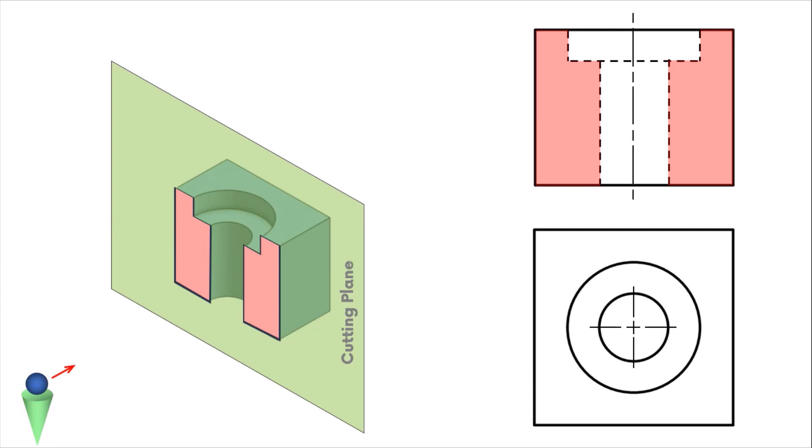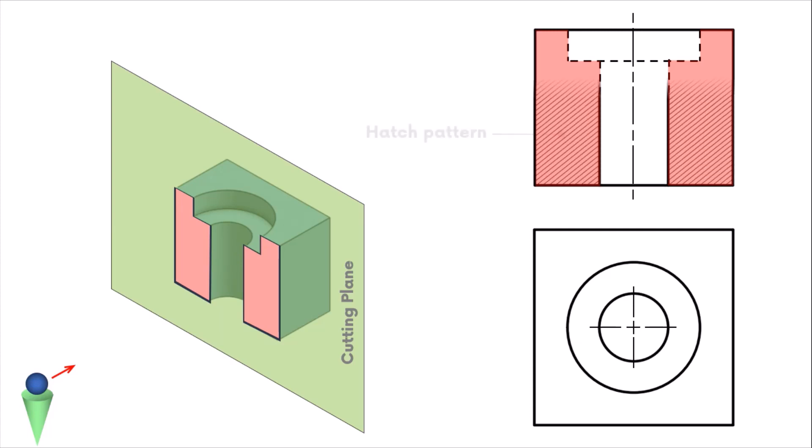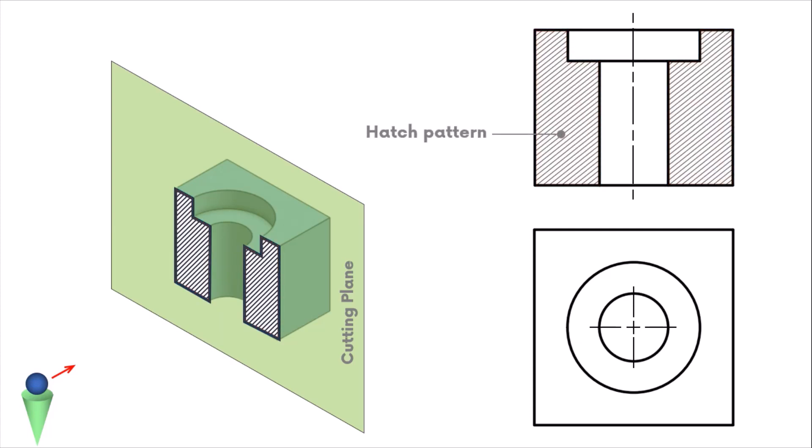After this, a hatch pattern is applied to the surfaces that make contact with the cutting plane. Notice how the hidden features are clarified in the sectional view. The location of the cutting plane is shown in a view adjacent to the section view, in this case the top view, and it is represented by a cutting plane line.